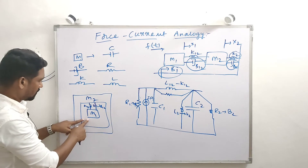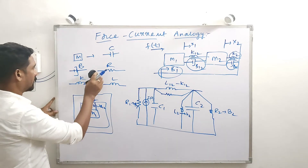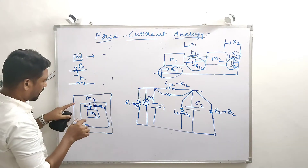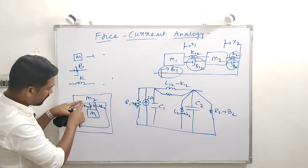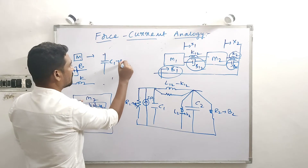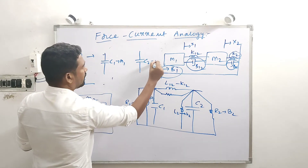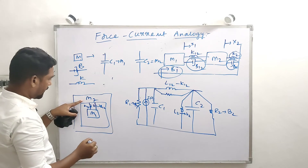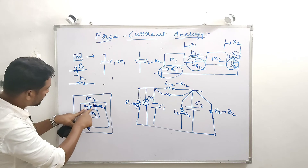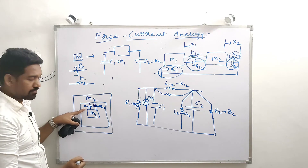Coming back to recap: any masses M1 and M2 are represented by capacitors C1 and C2. Check the picture — elements common between M1 and M2 are placed between the corresponding capacitor nodes, and elements exclusive to one mass are placed only at that node. The same principle applies.